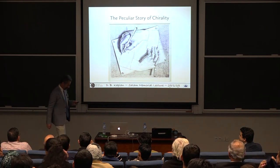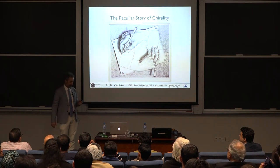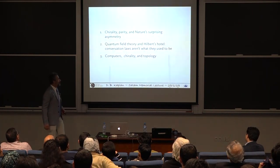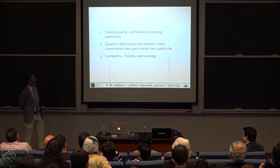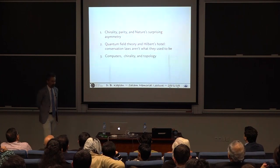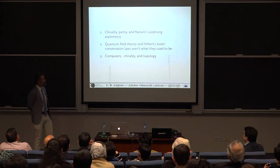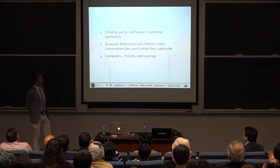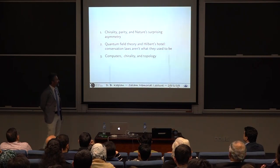So chiral comes from the Greek word for hand. So this is about handedness of particles. It's got three sections or chapters. The first one is on chirality, parity, and nature's surprising asymmetry, which leads directly to Salam's Nobel Prize winning work.